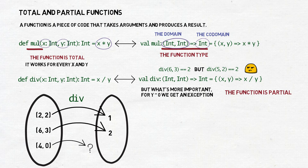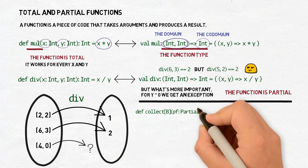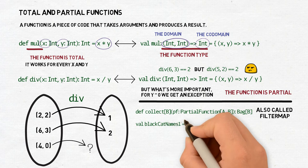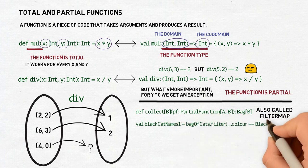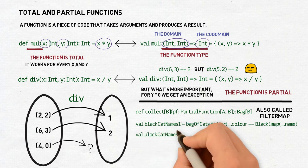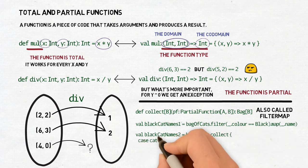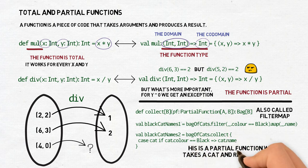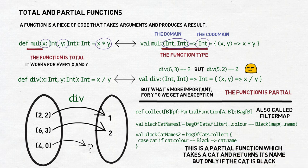It doesn't mean that partial functions are never useful. Sometimes we can use to our advantage the fact that they work only on a subset of possible input. One such popular case in Scala is the collect method in collections, also called filter map in some other languages like Rust. It's a shorthand for a common case where we first filter the original collection and then map the obtained subset to get a smaller collection of something else. Instead of having to first filter the whole collection and then map over the subset, we can use collect and provide it with a partial function which will work only for a subset of elements and it will map them.